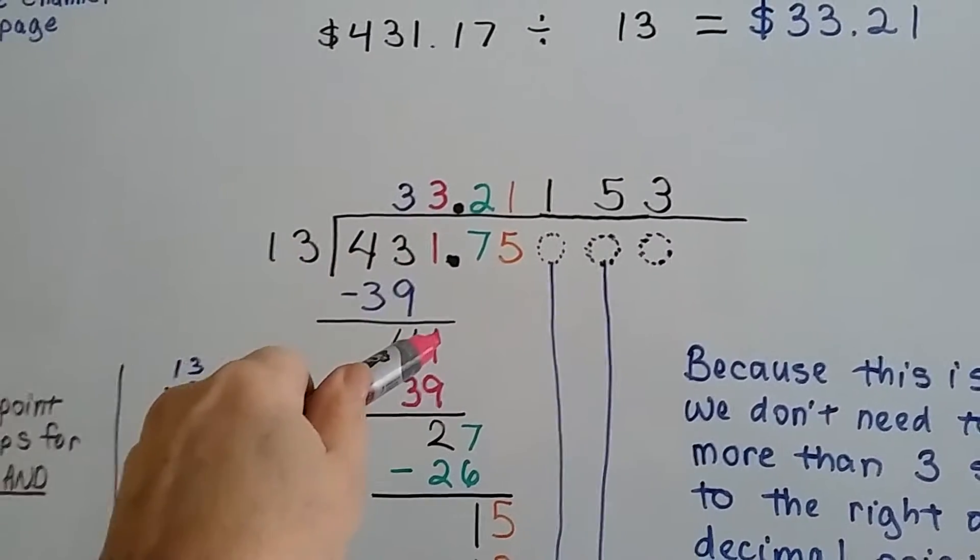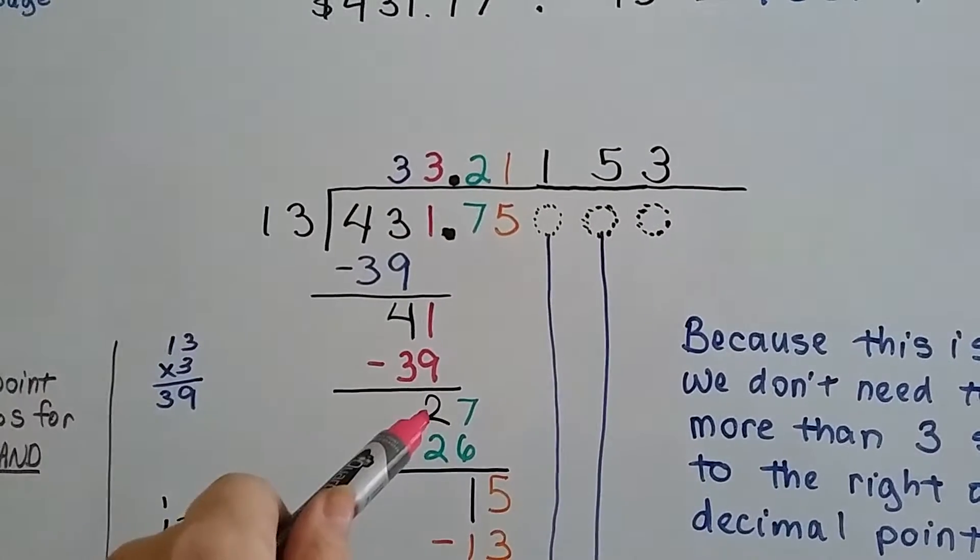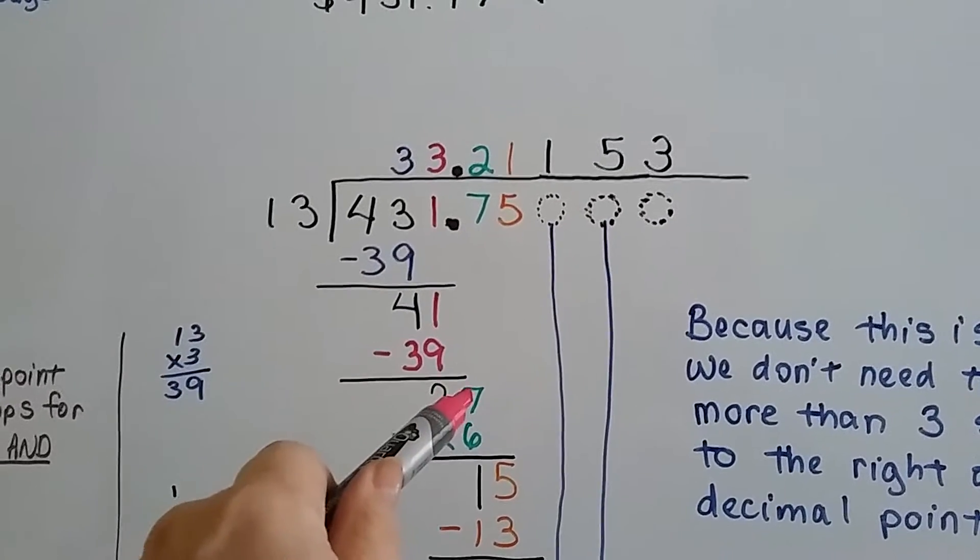Now it's this 1's turn to come down. 13 goes into 41. It's still 3. That's a 39. We do our subtraction and get 2. And now it's this green 7's turn to come down.